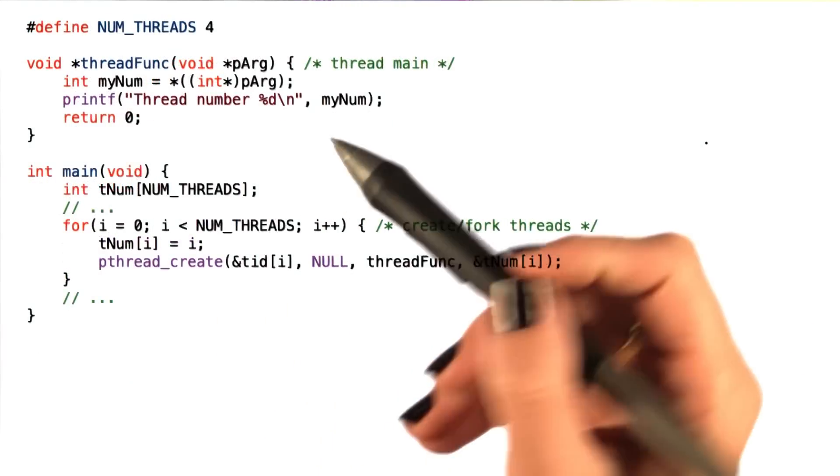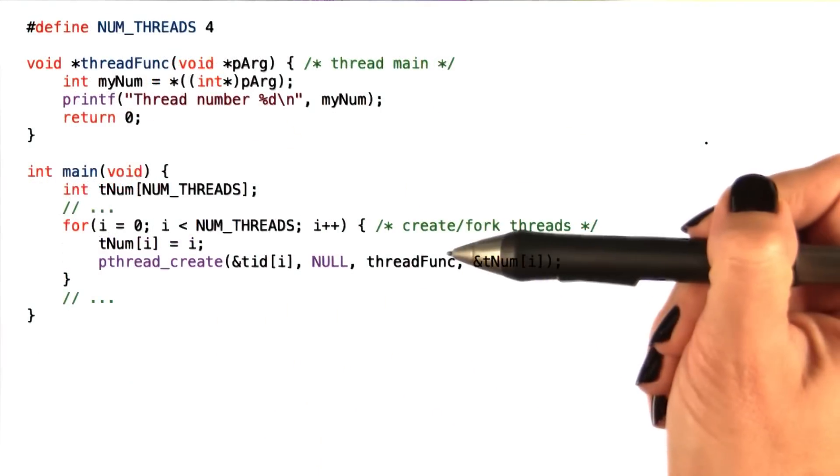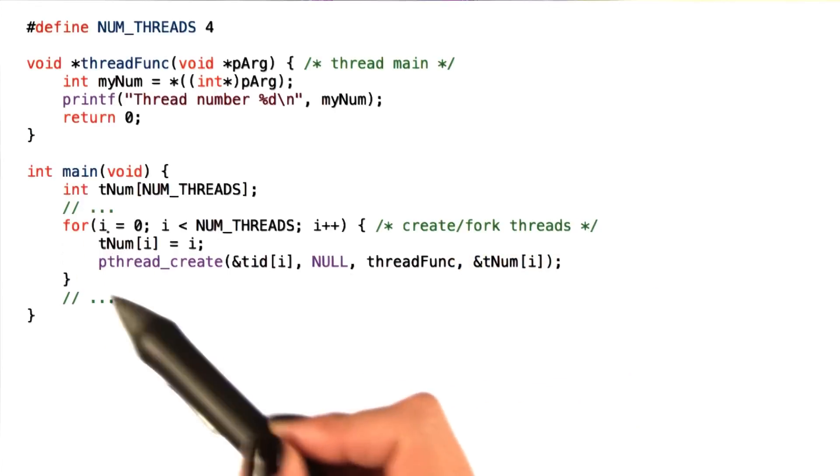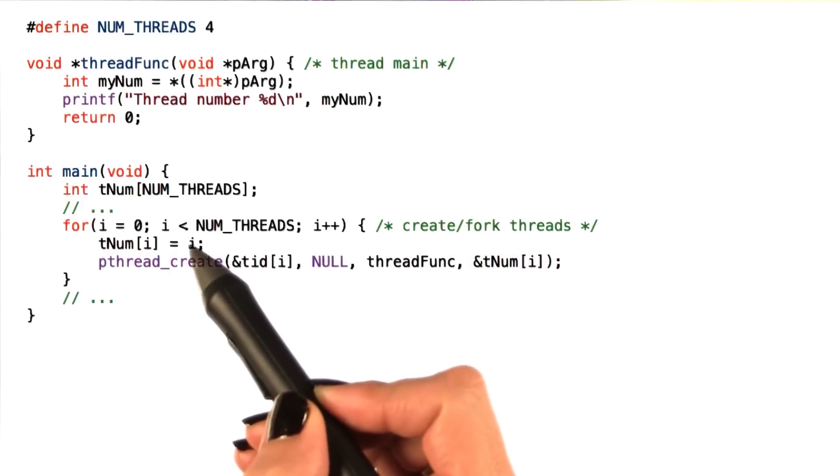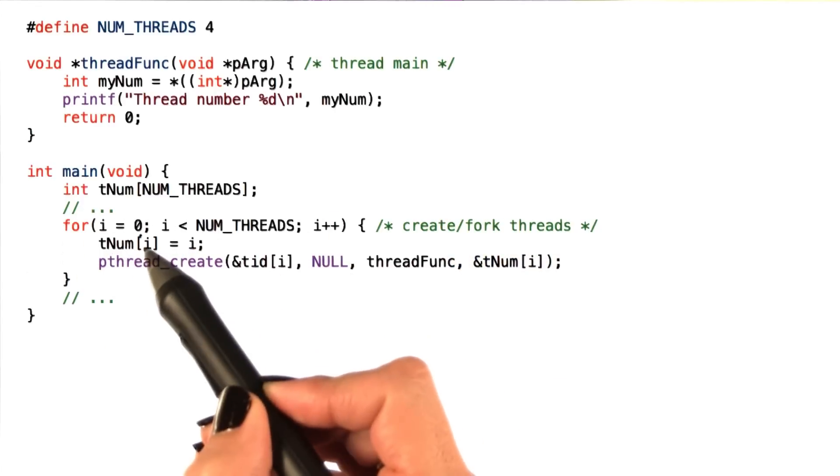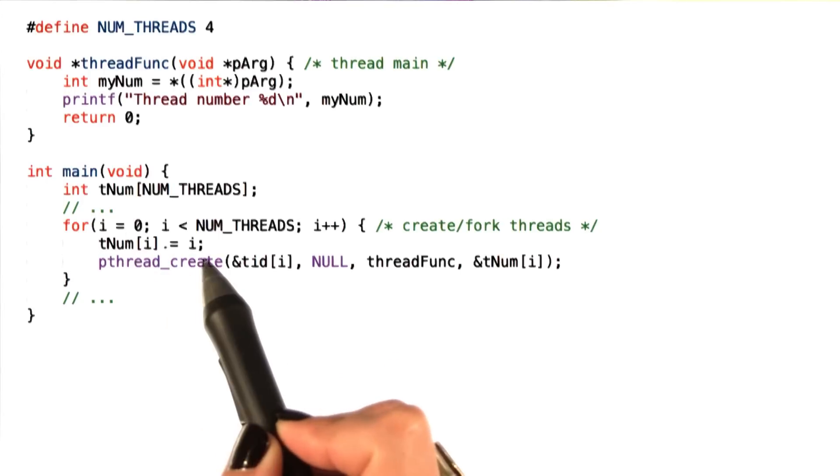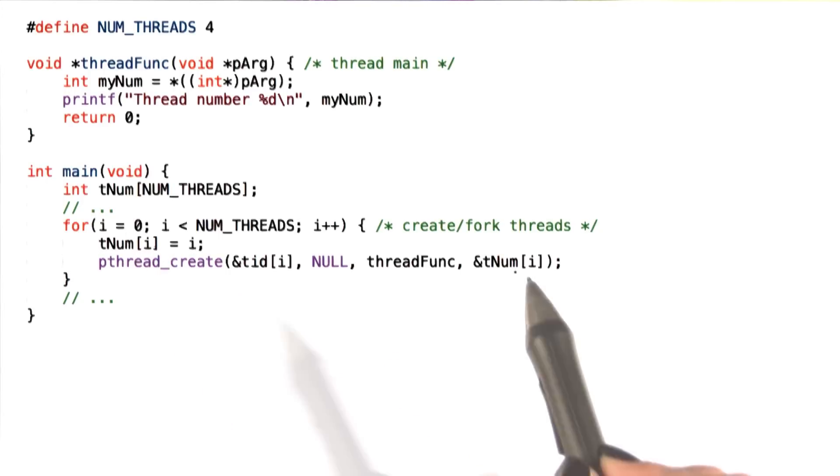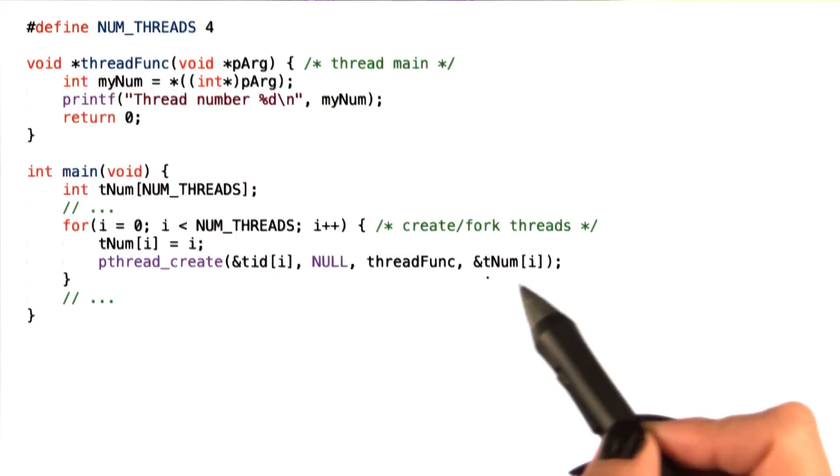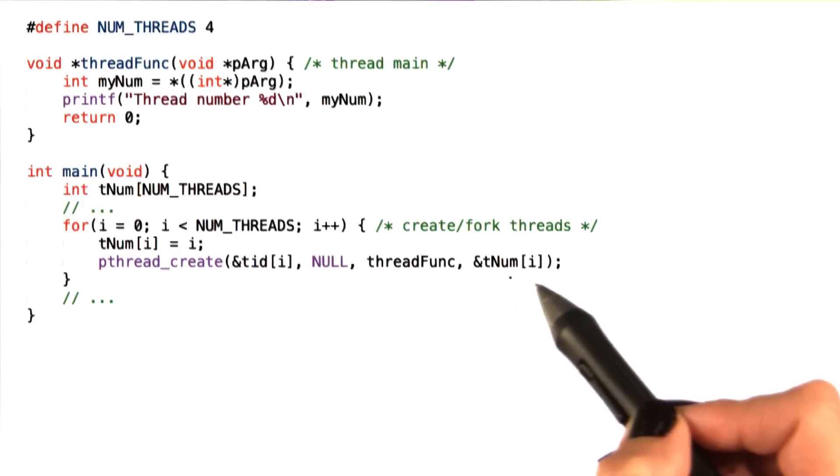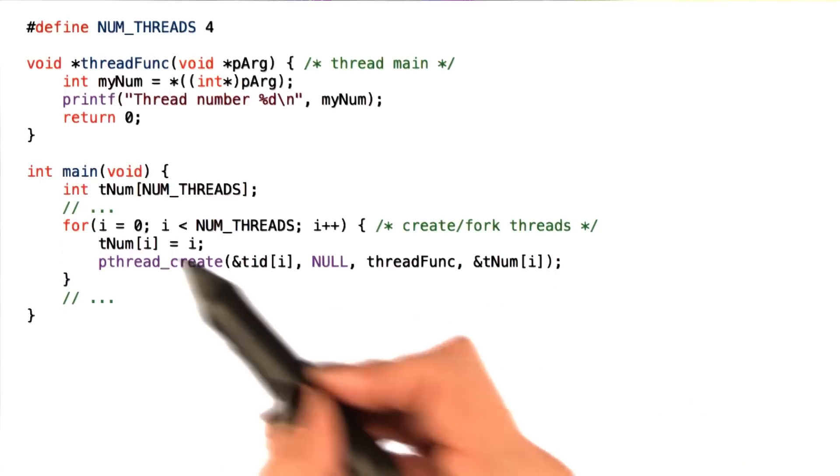To correct the problem, let's look at a slightly modified code here. We see that in the for loop in main, the value of i is first copied into an array, into an element of an array, tnum. The array has as many elements as there are threads. And when we're creating a thread, we pass as an argument the address of the particular element of the array that corresponds to that thread number.